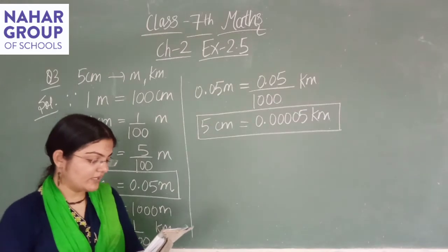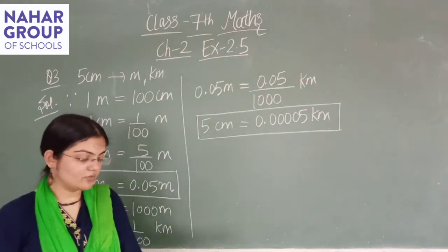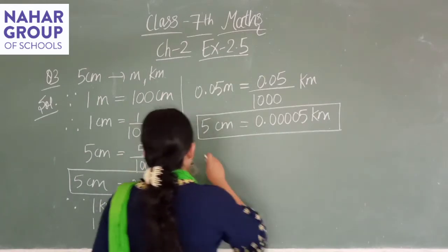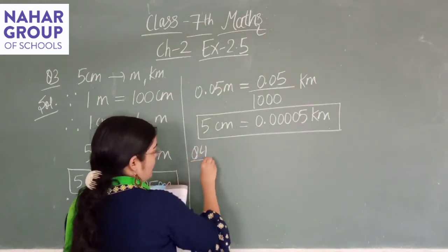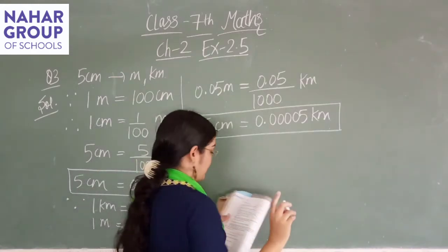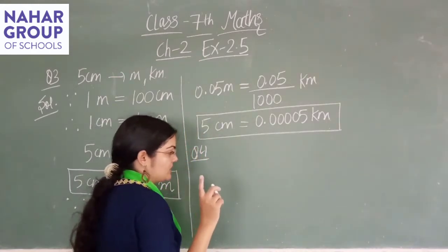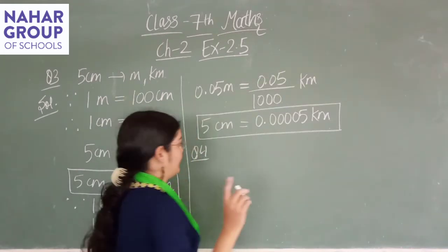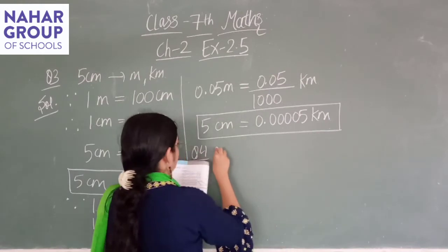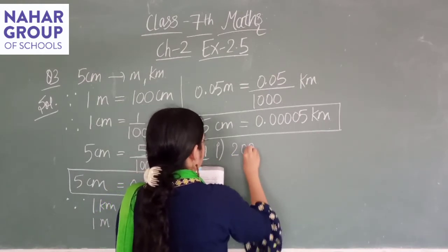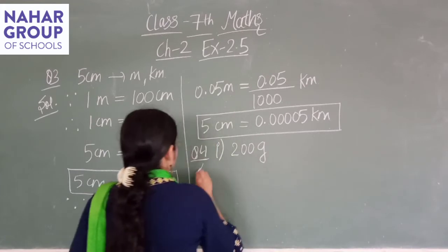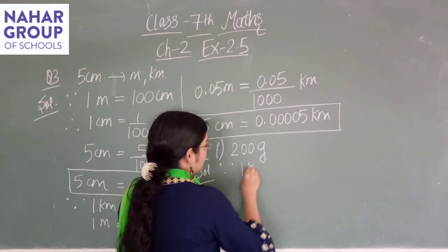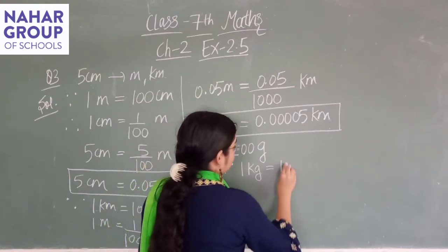Now question number 4: express in kilogram — question number 4 में आपको kilogram में express करना है। Gram में question दे रखा है, तो आपको gram और kilogram के बीच relationship पता होनी चाहिए। क्या relationship है? One kilogram equals to 1000 gram। So question number 4, first part is 200 gram — since we know one kilogram equals to 1000 gram।